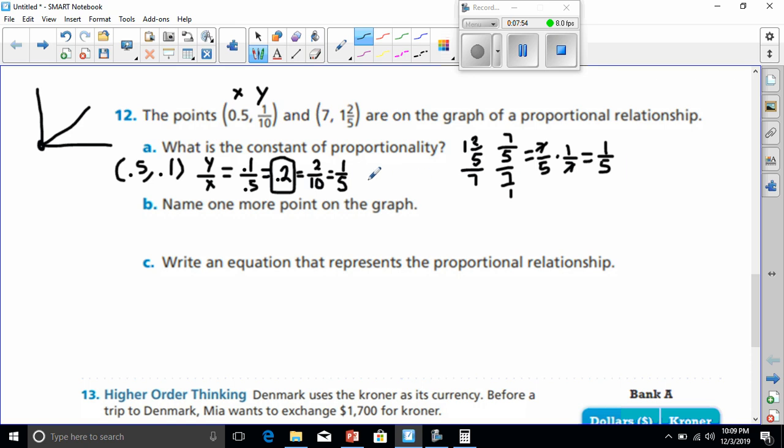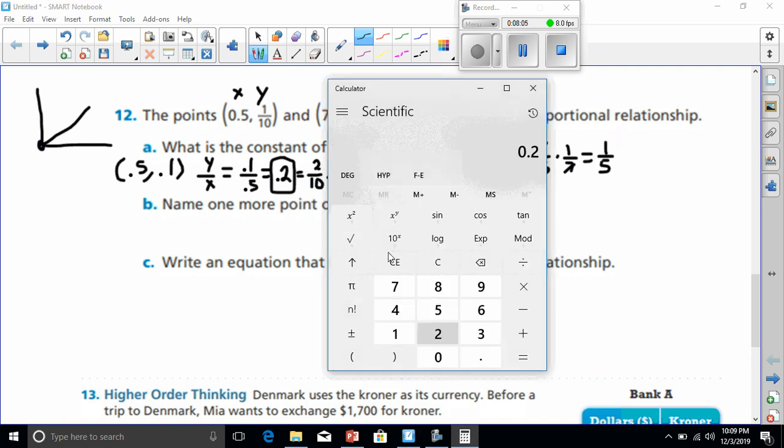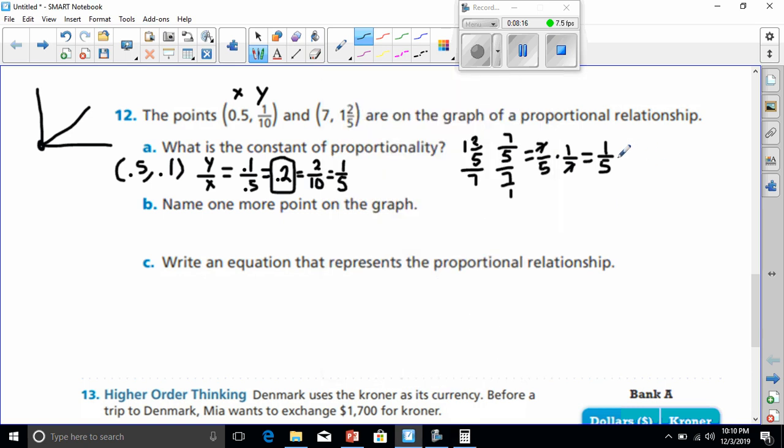You might be thinking, well, that's not 0.2, but remember, 0.2 turns to 2 over 10, which is 1/5. So, if I put my calculator to use once again, I would see that I would get 1 divided by 5, and that's going to give me 0.2 again. That means my constant of proportionality is 0.2.